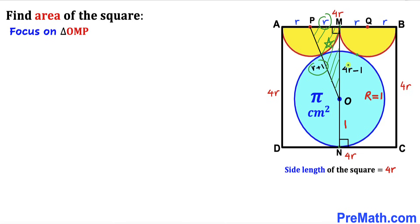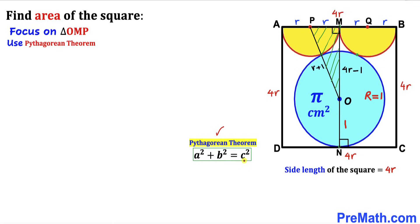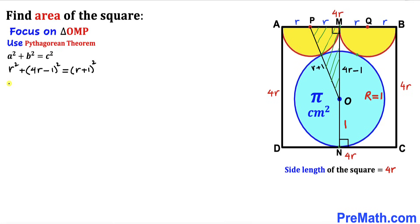Focusing on right triangle OMP, whose side lengths are lowercase r, (r + 1), and (4r − 1). We apply the Pythagorean theorem: a squared plus b squared equals c squared, where the longest leg is (r + 1). Filling in: r squared plus (4r − 1) squared equals (r + 1) squared. Expanding the left side using (a − b)² = a² − 2ab + b², we get r squared plus 16r squared minus 8r plus 1.